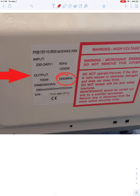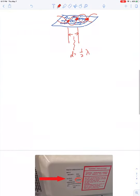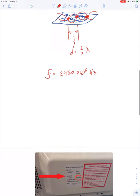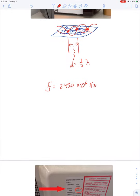So F is equal to 2,450 times 10 to the sixth hertz. And let's say, for example, the distance between these two melted spots of the cheese came out to be about 6 centimeters. Then that means the wavelength would be double that value of 12 centimeters, or 0.12 meters.